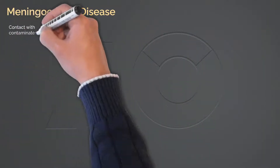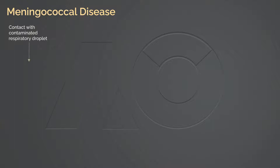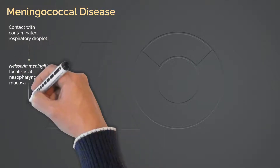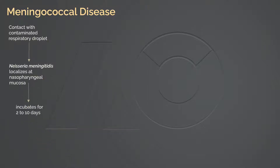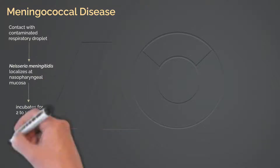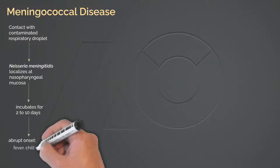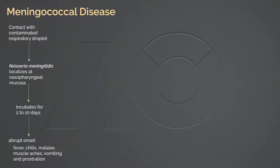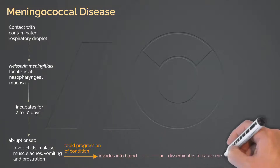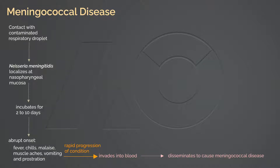After contact with contaminated respiratory droplets, Neisseria meningitidis localizes to the nasopharyngeal mucosa and incubates for 2 to 10 days. Patients experience an abrupt onset of general signs and symptoms of infection, including fever, chills, malaise, muscle aches, vomiting, and prostration. As the bacteria invades the bloodstream, it disseminates and causes meningitis and meningococcemia.